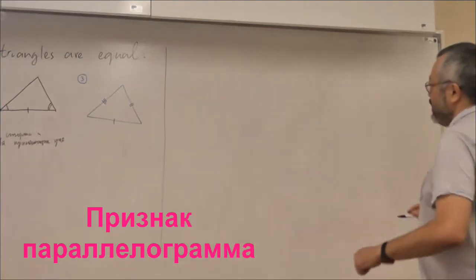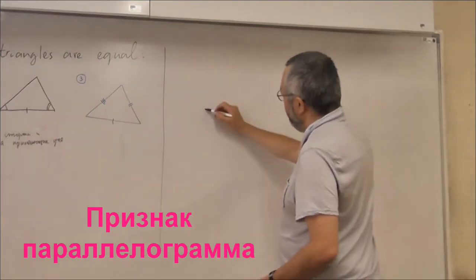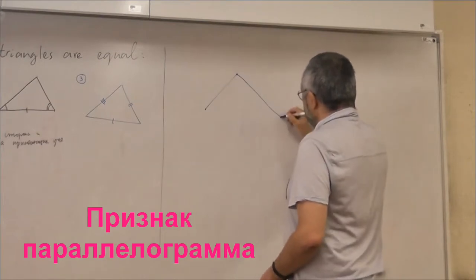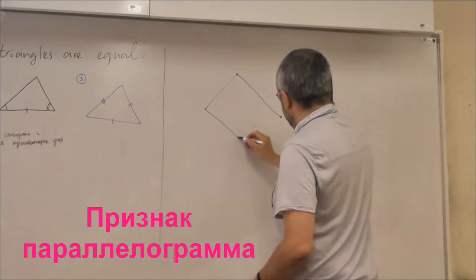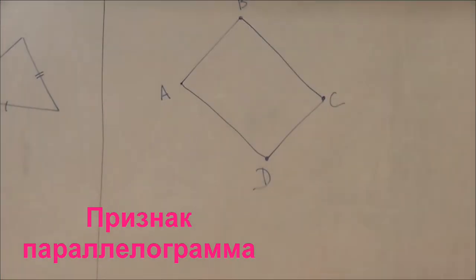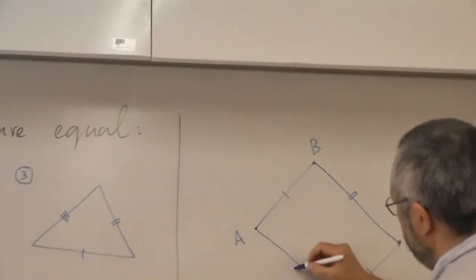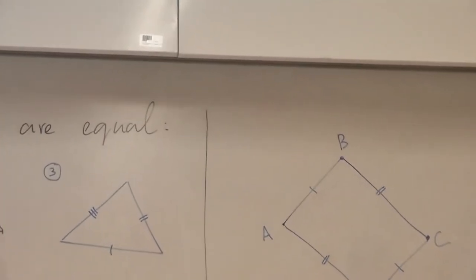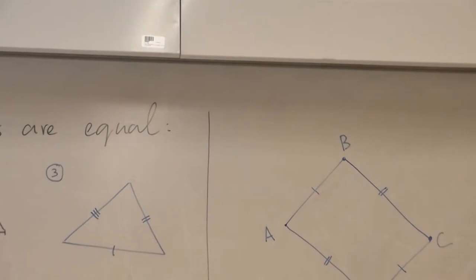Let's try to use it somehow. So the next problem. Imagine we have a quadrilateral when the opposite sides are equal. Imagine we know that this is equal to this and this is equal to this. AB is equal to CD and BC is equal to AD.